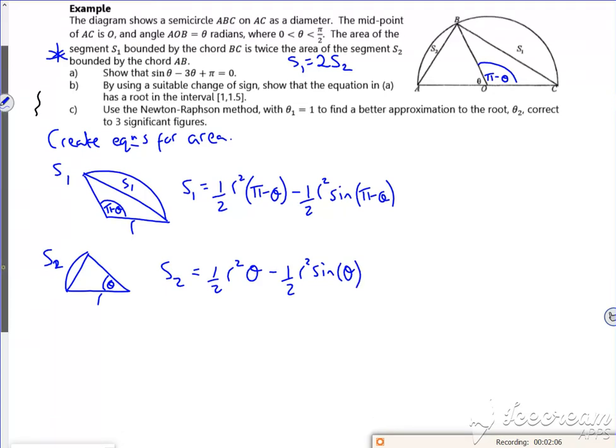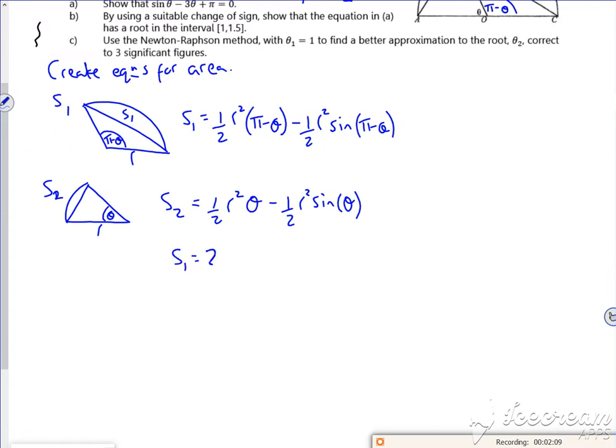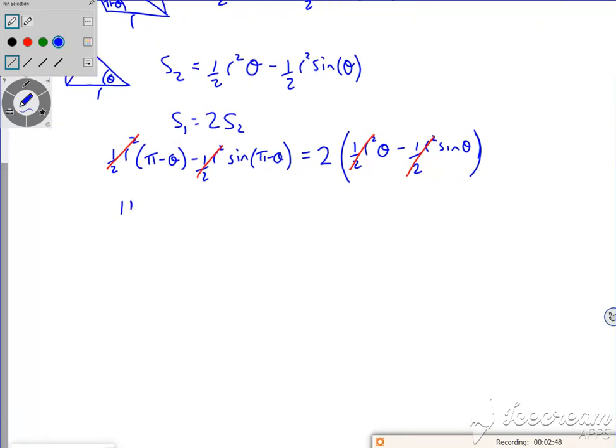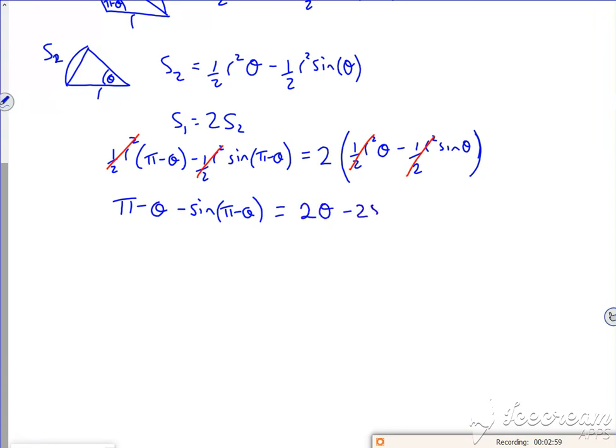Right, so I'm saying that S1 is two lots of S2. So S1 is the half R squared pi minus theta, minus a half R squared sine of pi minus theta. I can see these half R squareds cancel themselves out. Two lots of S2, which is a half R squared theta minus a half R squared sine theta. And they do, don't they? The half R squareds, they're going to cancel out. So I've got pi minus theta minus sine of pi minus theta is two lots of theta minus two lots of sine theta.